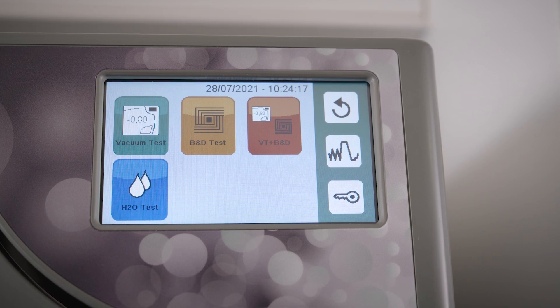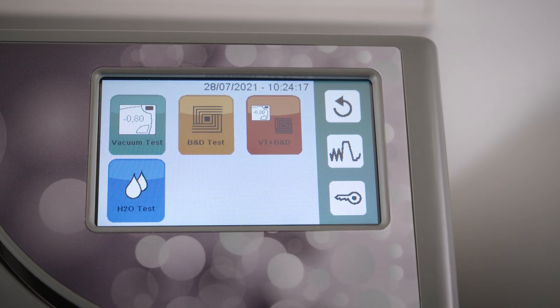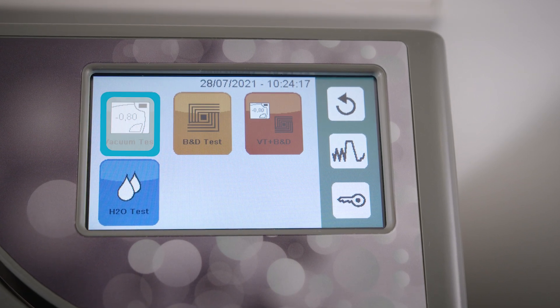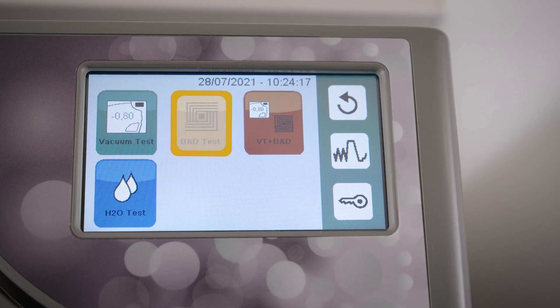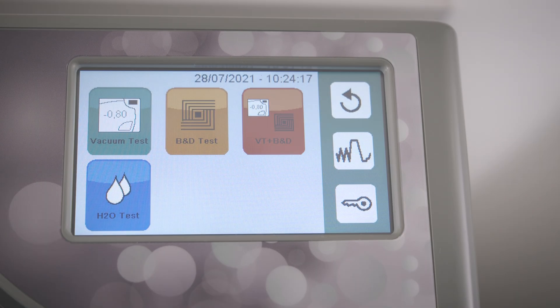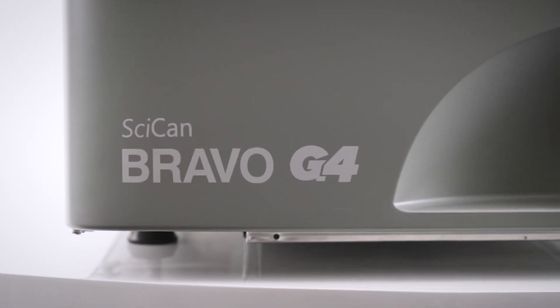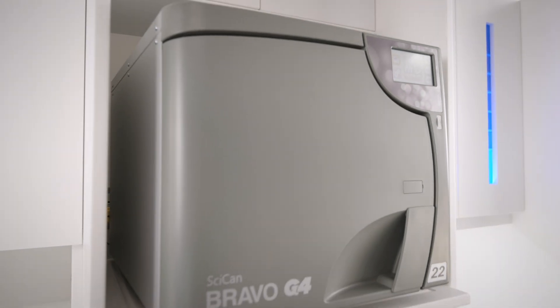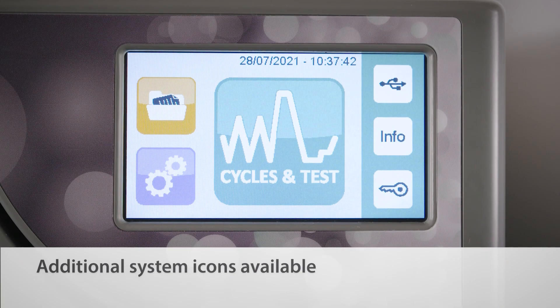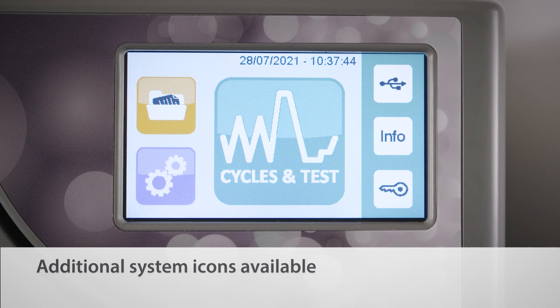The Bravo G4 offers three test cycles to periodically check the unit's effectiveness: a vacuum test, a Bowie-Dick test, and a cycle that allows the vacuum and Bowie-Dick test to be run back-to-back. Follow the instructions in the operator's manual for properly performing these tests. Please follow local guidelines for the required frequency for performing all sterilization monitoring tests.